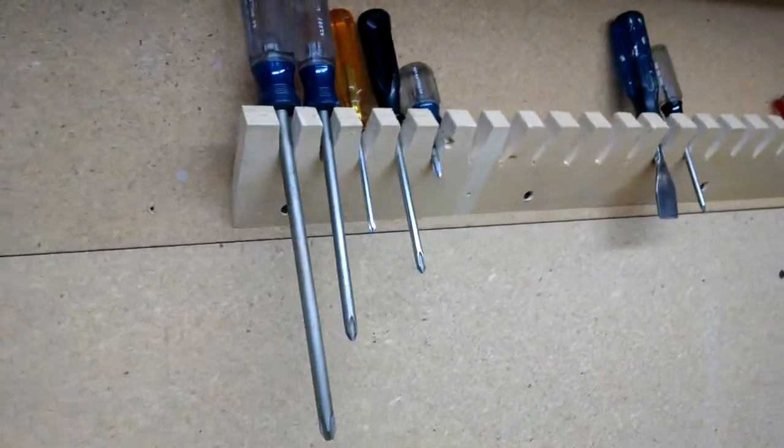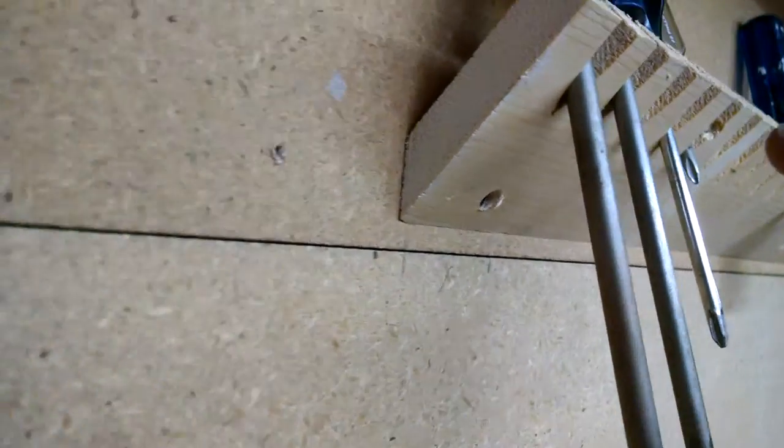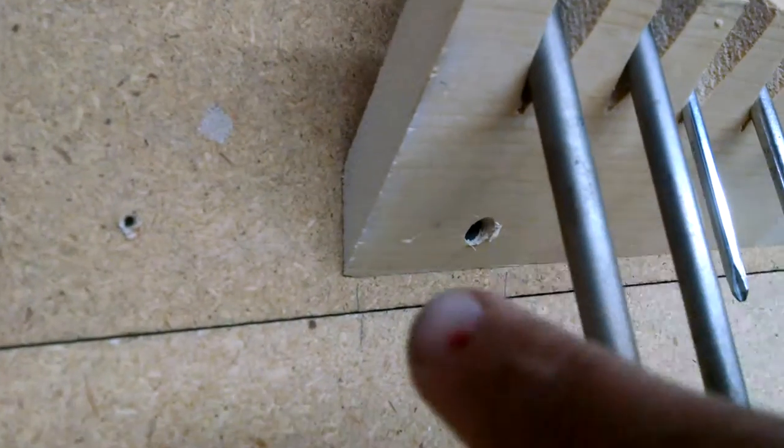What I did was cut a piece of wood at a 45 degree angle, just like the French cleat thing. But then I made little pocket holes to screw in.